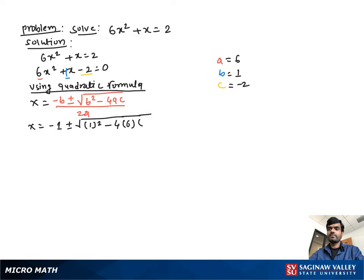Then x = (-1 ± √(1 + 48)) / 12. 1² is 1, minus times minus will be plus, and 4 times 6 times 2 will be 48 over 12.